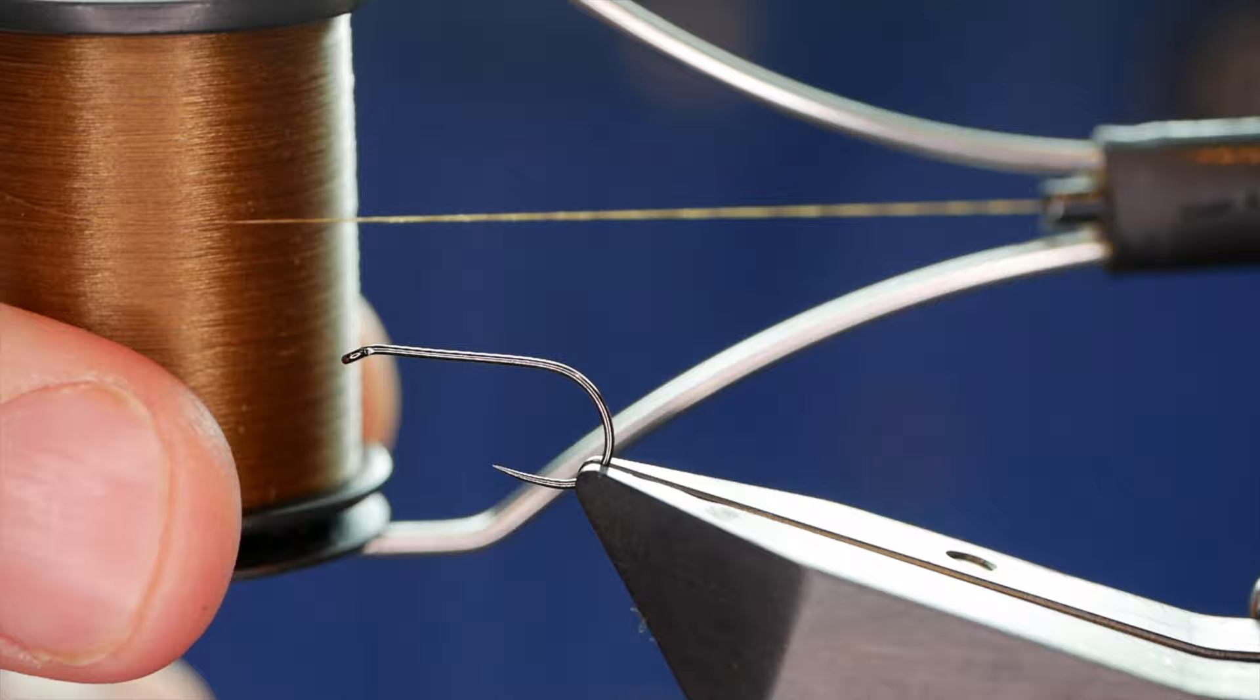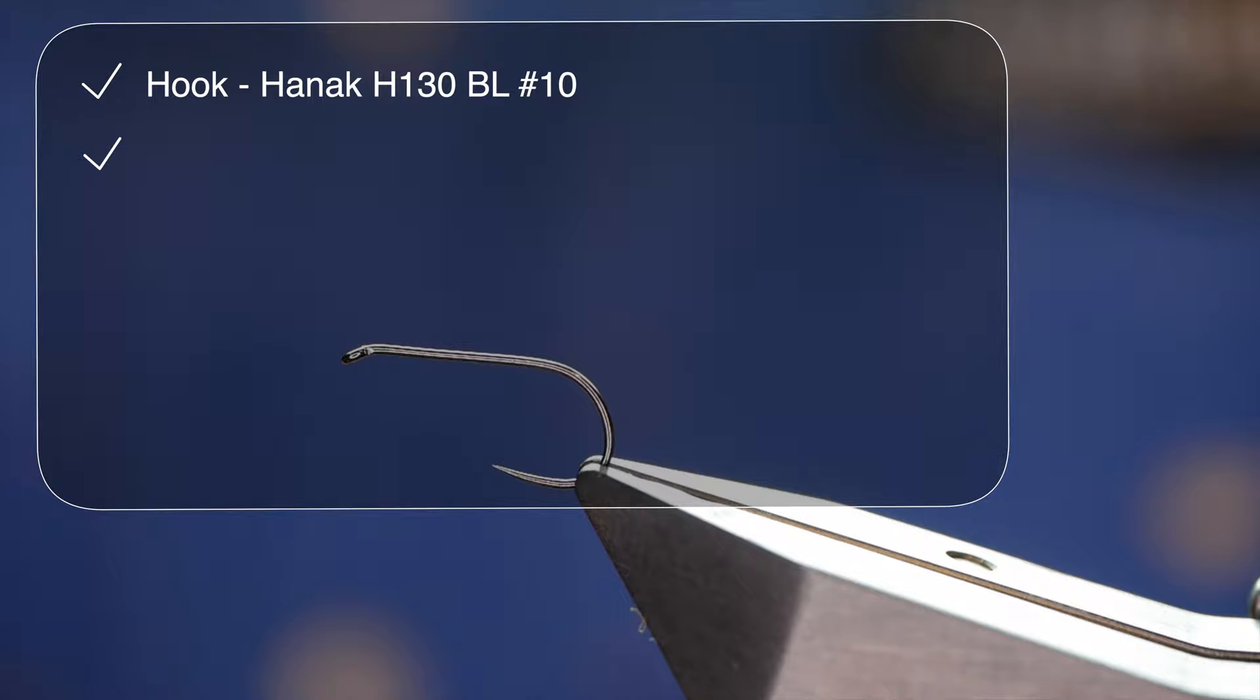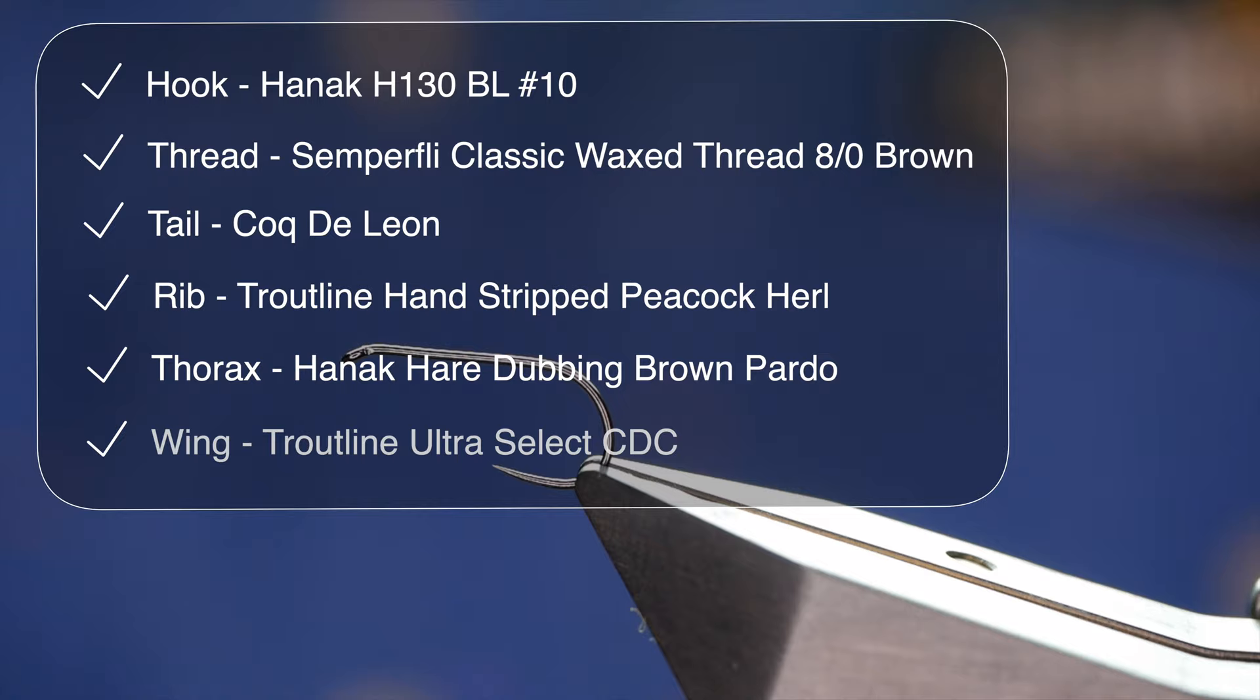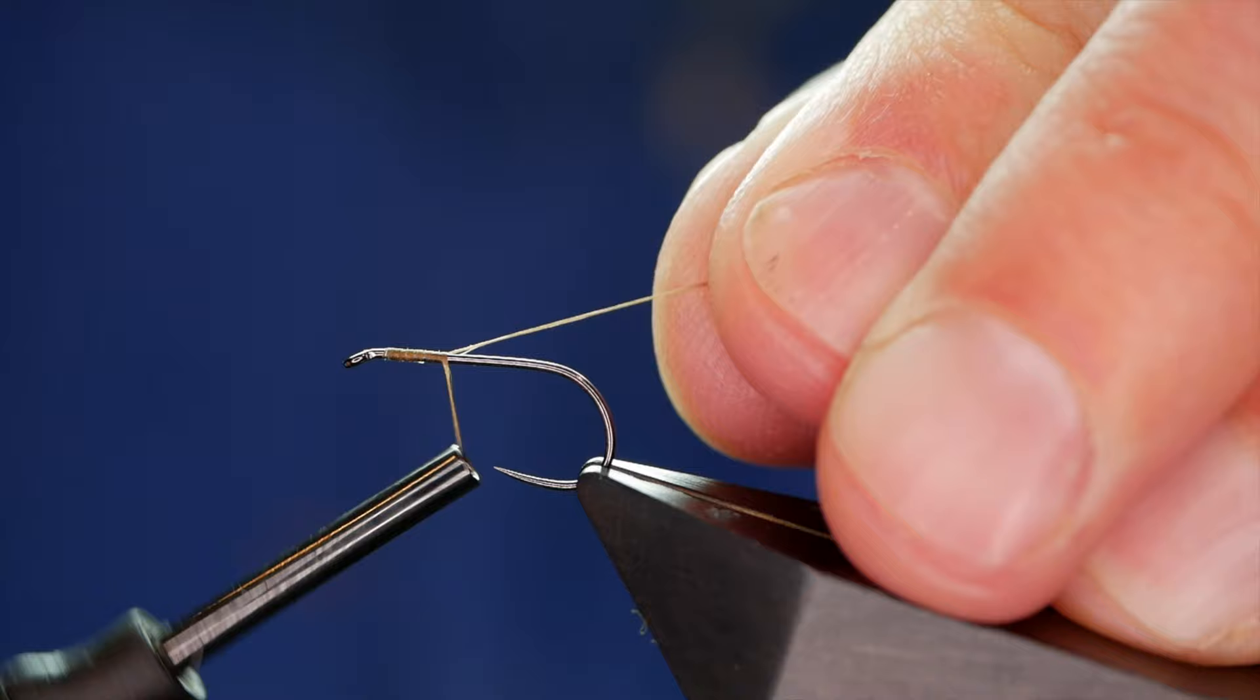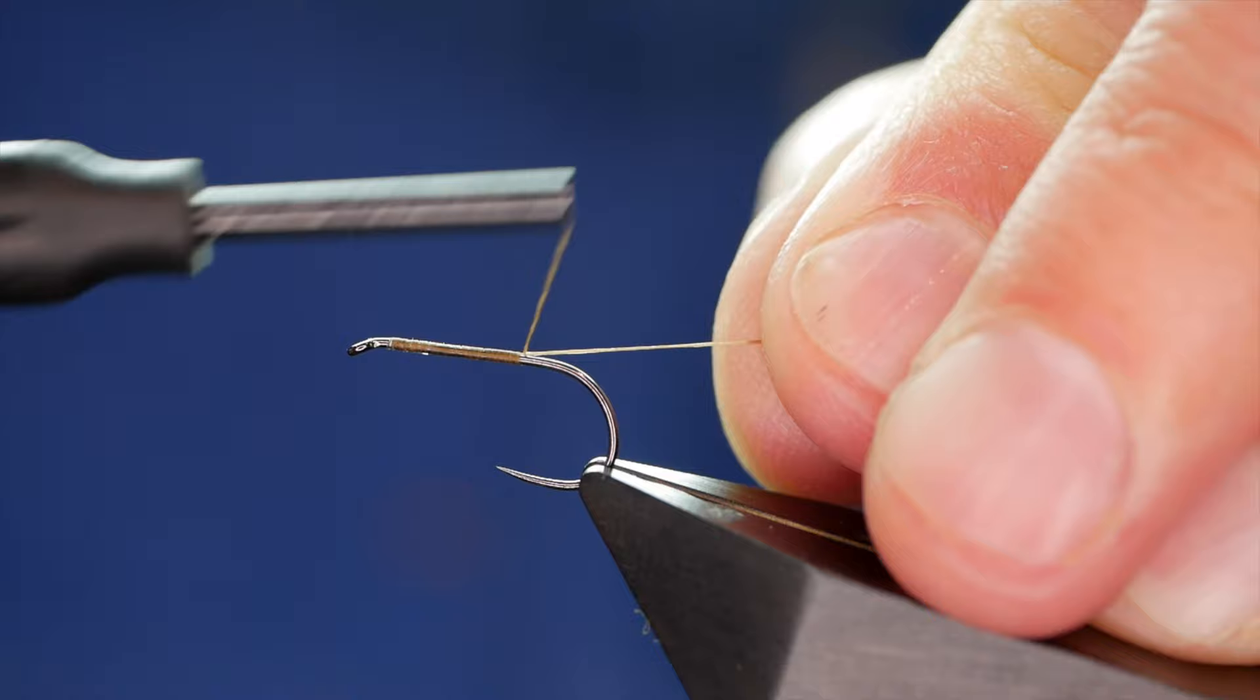First thing I want to do is get a little bit of wax onto my thread. Don't need much, just to help bed it down to the shank. Now I'm going to catch just back from the eye and then run a bed of thread all the way down the shank using my rat's tail as a guide just to get touching turns.